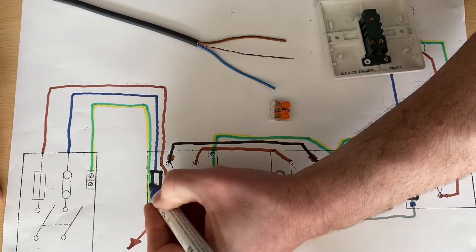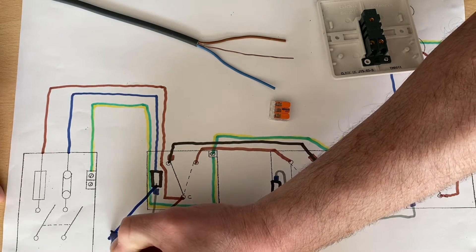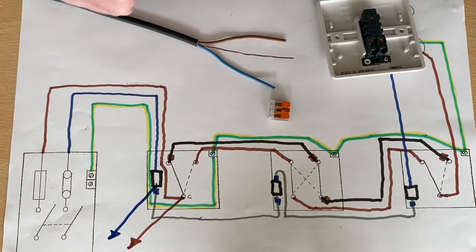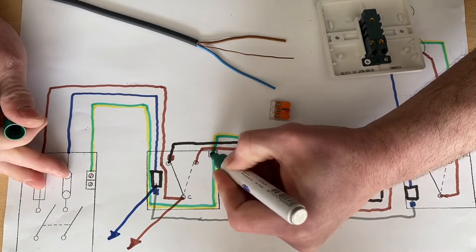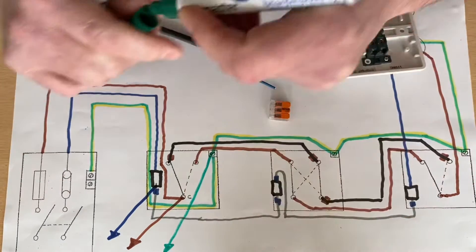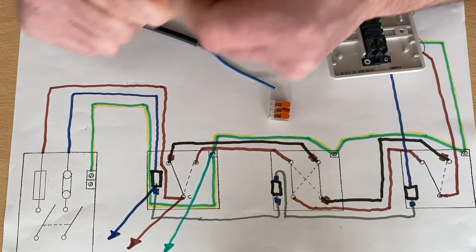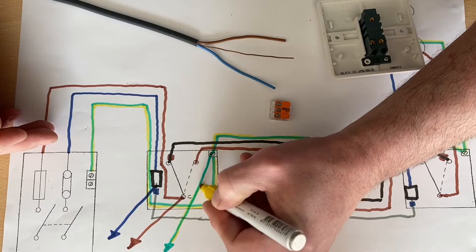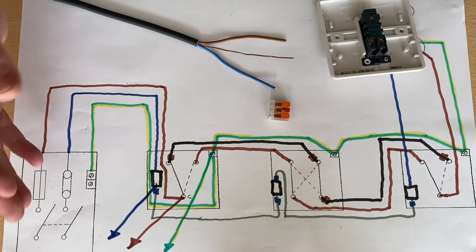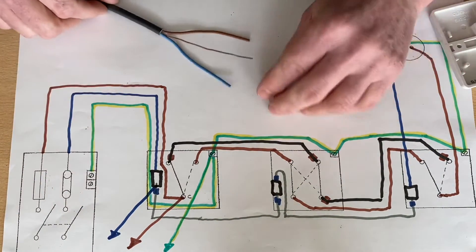We'd come out of our connector with our neutral, and we would come out with our CPC. And that would go off through the fabric of the building to feed the next area in which we're working in. So that's how we would do that.